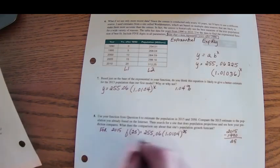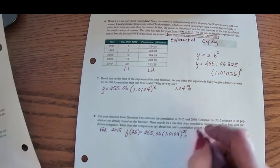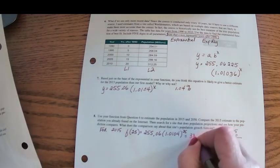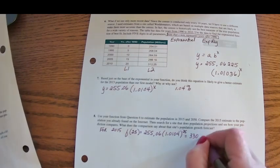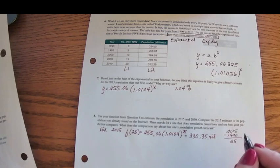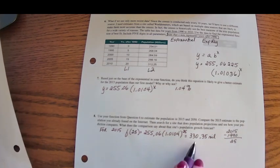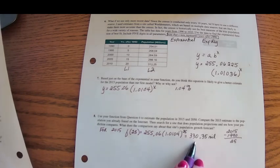And so for the year 2015, using the model that our calculator came up with, that's 330.35 million. And that's actually a lot closer to what the worldometer estimate was.